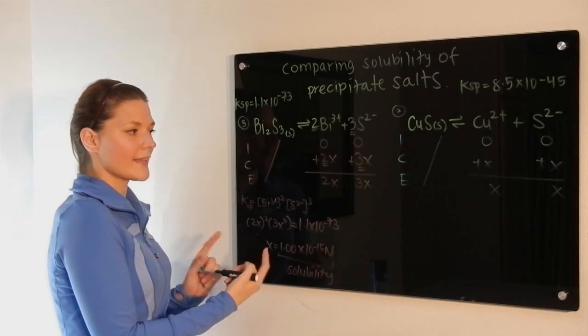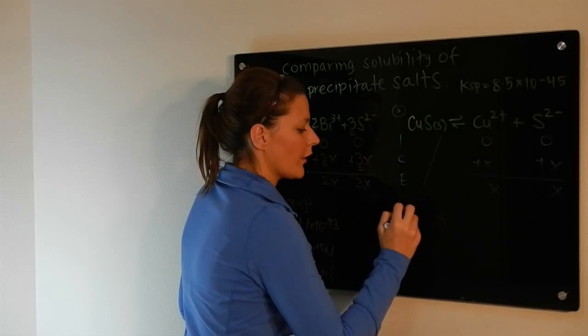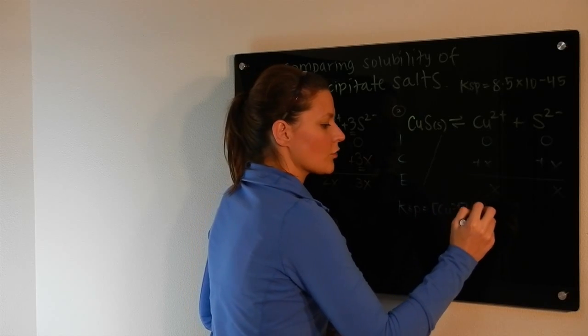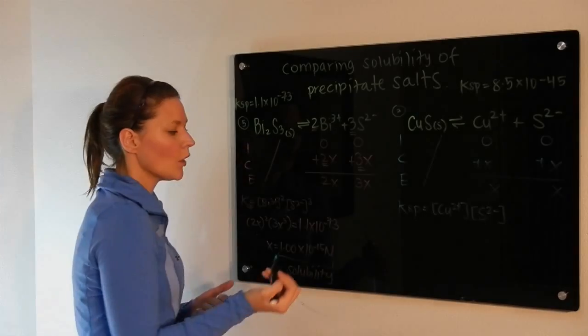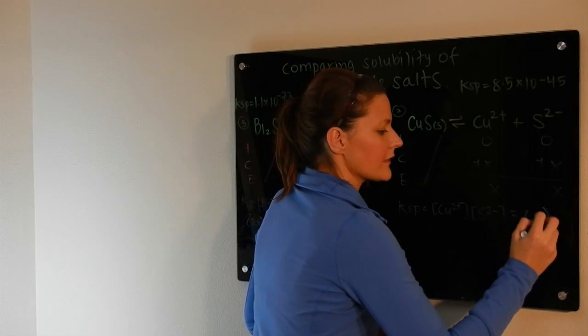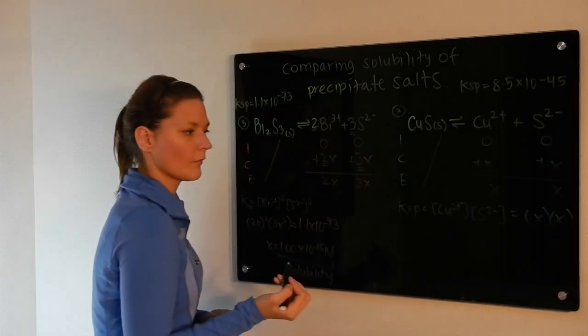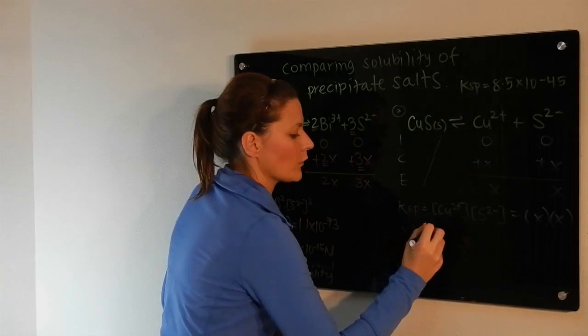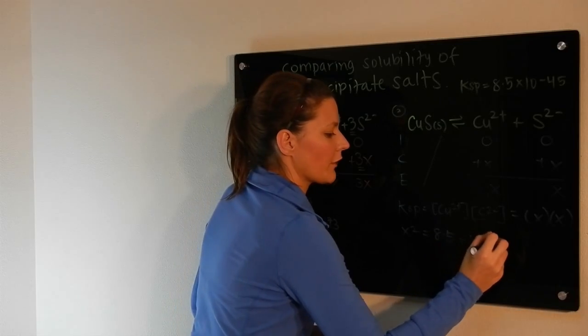We're going to follow exactly the same procedure. Get our expression for Ksp, the concentration of copper 2 plus times the concentration of sulfide, which in this case would be X times X. We then set that equal to the Ksp value provided, which is 8.5 times 10 to the minus 45.